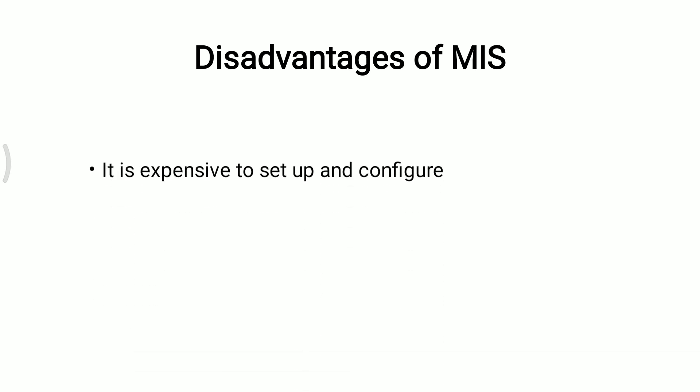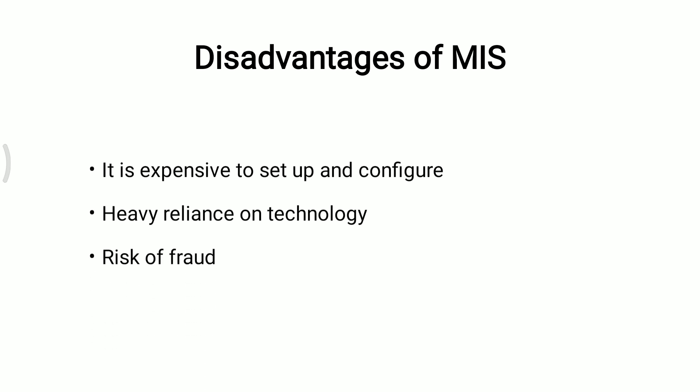Disadvantages of MIS. First, it is expensive to set up and configure. The organization has to buy hardware and the required software to run the information system. In addition, business procedures will need to be revised, and the staff will need to be trained on how to use the computerized information system. Second is heavy reliance on technology. If something happens to the hardware or software that makes it stop functioning, then the information cannot be accessed until the required hardware or software can be replaced. Third is risk of fraud. If proper controls and checks are not in place, an intruder can post unauthorized transactions, such as an invoice for goods that were never delivered. These are the advantages and disadvantages of MIS.